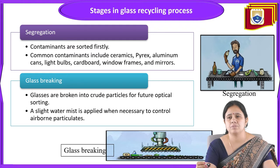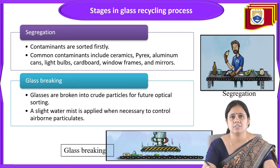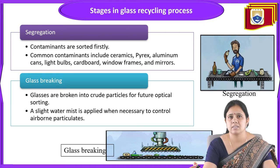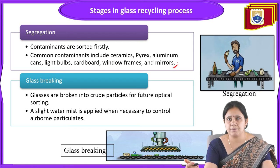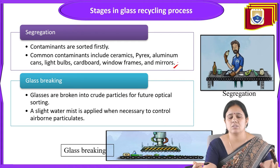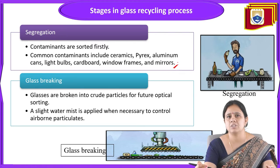Now let's discuss the steps in the glass recycling process. Step one is segregation. Contaminants are sorted first. Common contaminants include ceramics, pyrex, aluminum cans, light bulbs, cardboard, window frames, and mirrors. These must be segregated and sorted out from the glass before processing.